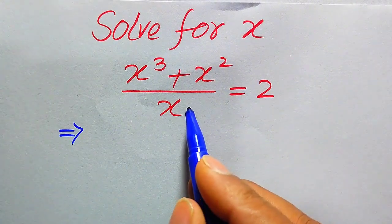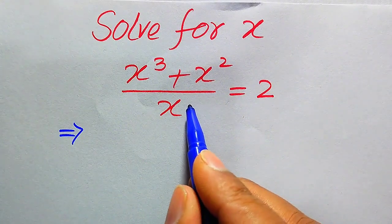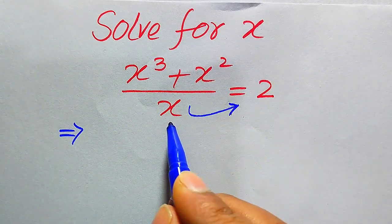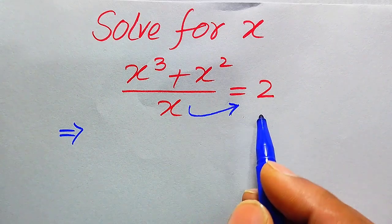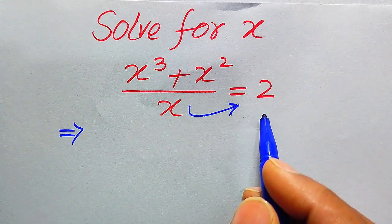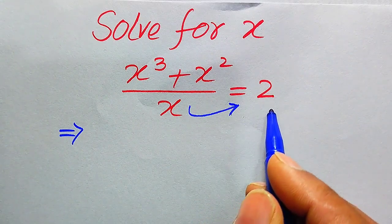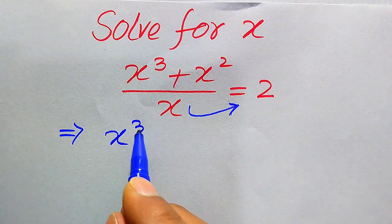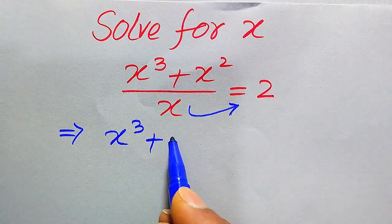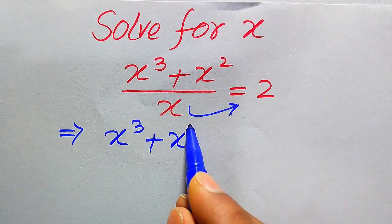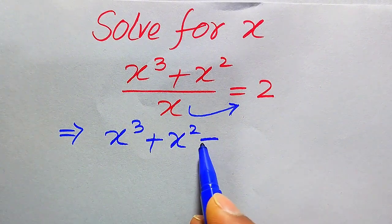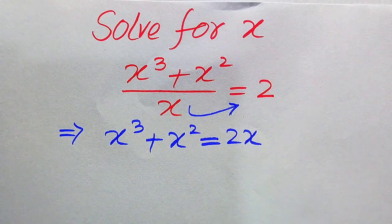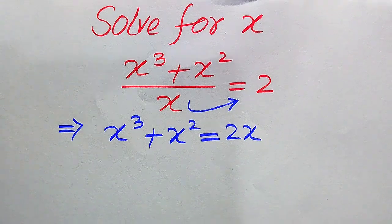Here we move the x from the left-hand side to the right-hand side. When we move it to the right-hand side, it is multiplied, and it will be written as x³ + x² equals x multiplied by 2, which becomes 2x.